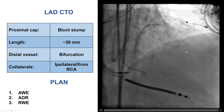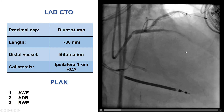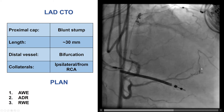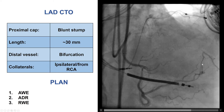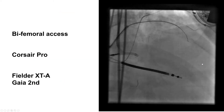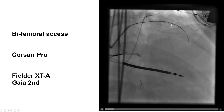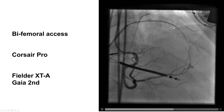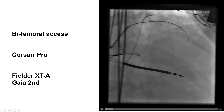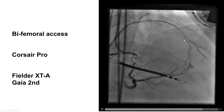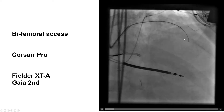Our plan was to start with antegrade wire escalation, then ADR with re-entry, and leave retrograde as the third option. We obtained bifemoral access. We did use a Corsair and then a Fielder XTA followed by a Gaia 2nd that seemed to be going sub-intimally or into a septal branch.